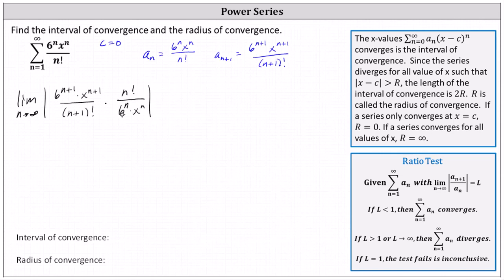Looking at the base of 6, notice we have one more factor of 6 in the numerator than we do in the denominator. 6 to the power of n plus 1 divided by 6 to the power of n simplifies to one factor of 6 in the numerator. Now we simplify n factorial divided by n plus 1 factorial. Remember, n plus 1 factorial equals n plus 1 times n times n minus 1 and so on — the factors of n times n minus 1 and so on equal n factorial — so n factorial divided by n plus 1 factorial simplifies to just 1 over n plus 1.